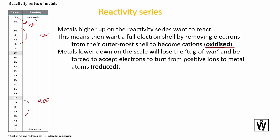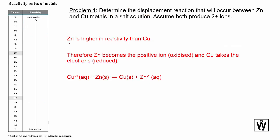This covers metal reactivity and displacement reactions, with unit one interpretation and unit three terminology added. As an example reaction with zinc and copper — assuming 2+ ions for transition metals — we find where each sits in the series. Zinc is higher, so it's oxidized and loses electrons; copper is lower, so it's reduced and gains electrons to become the metal. That's how we use the reactivity series to work out oxidation and reduction.